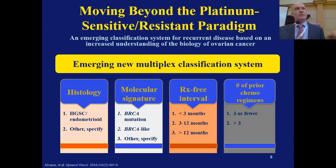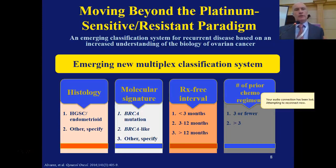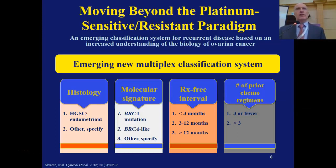How do we move beyond just thinking about ovarian cancer as platinum-sensitive and platinum-resistant? Ronnie Alvarez, myself, and Rob Coleman authored a paper that I think has been important in really trying to change the construct — where we don't only look at the platinum-free interval, but also look at histology, since we see marked differences in outcomes based on histology. Serous and endometrioid behave much better than mucinous and clear cell. We also need to think about molecular signature, BRCA mutations, and so forth, which will set the stage for our clinical discussion of PARP inhibitors at the lunch symposium.